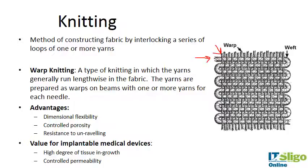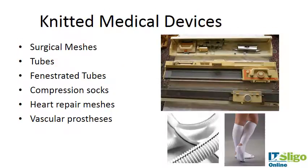You get a nice woven structure. They offer great advantages: they give good dimensional flexibility, they're flexible in every dimension, you can control the porosity, and they are very resistant to unraveling — making them very good for implantable medical devices. You get a high degree of tissue ingrowth, especially in things like hernia mesh repair, and controlled permeability.